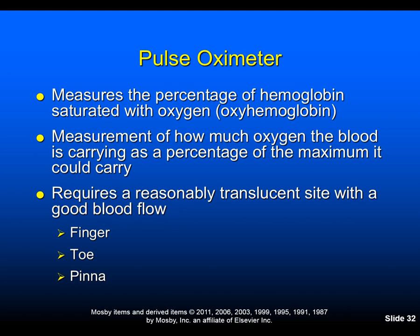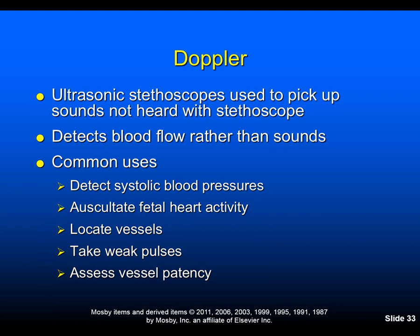The pulse oximeter measures the percentage of hemoglobin saturated with oxygen — how much oxygen the blood is carrying as a percentage of the maximum it could carry. It requires a reasonably translucent site with good blood flow; typically we use the finger, toe, or pinna of the ear, and sometimes even the forehead. The Doppler is used when sounds are too difficult to auscultate with a regular stethoscope; it detects blood flow rather than sounds. Common uses include detecting systolic blood pressures, auscultating fetal heart tones, locating pulsatile vessels, taking weak pulses, and assessing vessel patency.